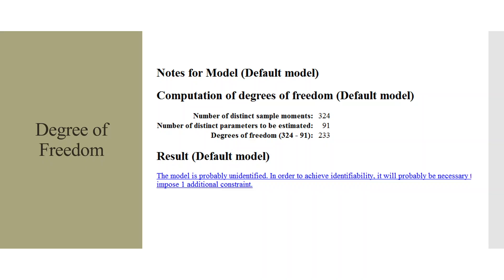Sometimes when you run a model in SPSS-AMOS, it will give you a warning which you can see in blue color. The warning is: the model is probably under-identified. In order to achieve identifiability, it will probably be necessary to impose one additional constraint. This warning is related to the degree of freedom.